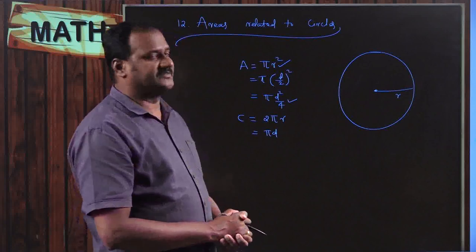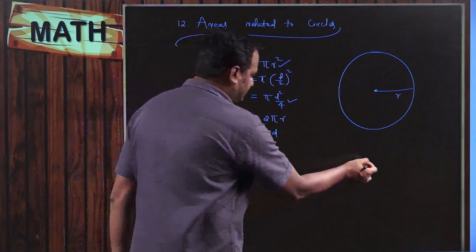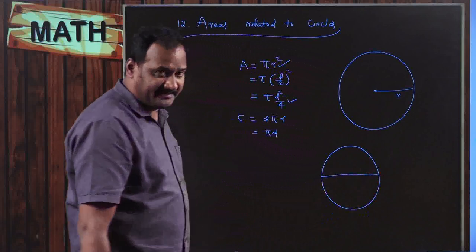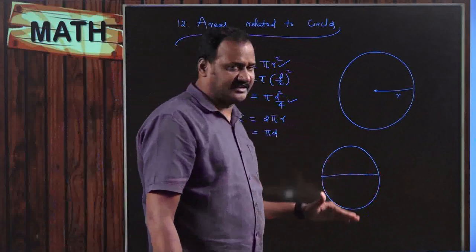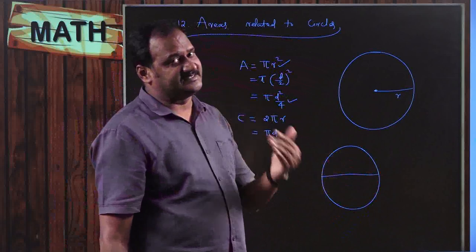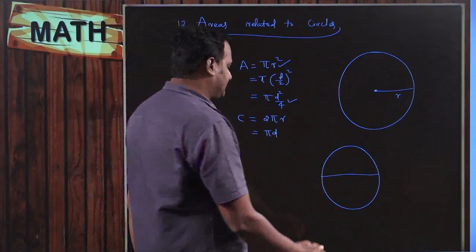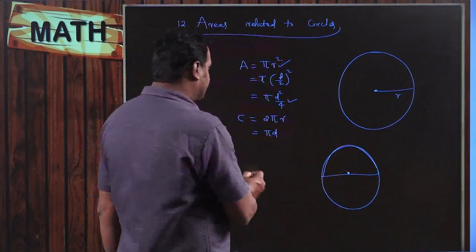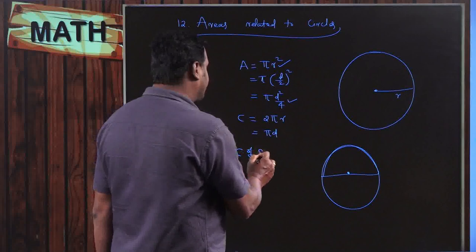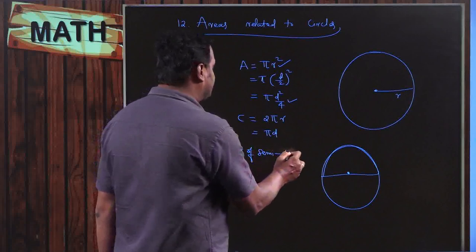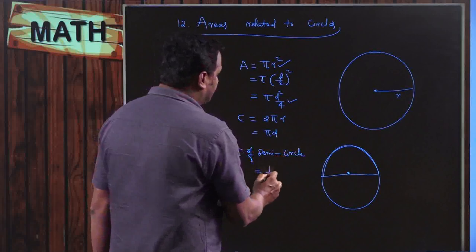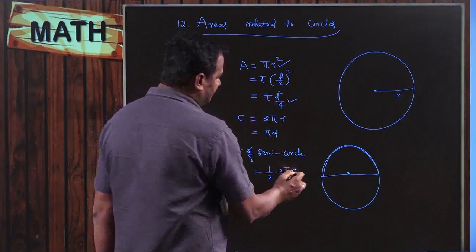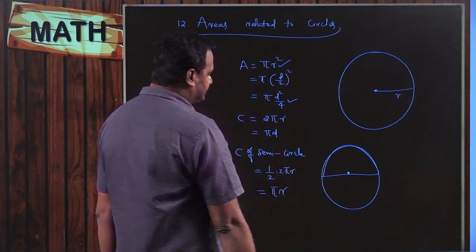If we take a part of the circle — the diameter divides the circle into two semicircles. The circumference of a semicircle is half the circumference of the circle. Circumference of the circle is 2πr, so half of that is πr. So πr is the circumference of the semicircle.